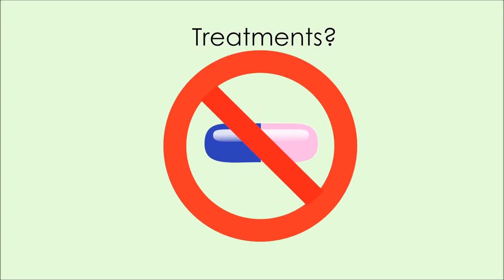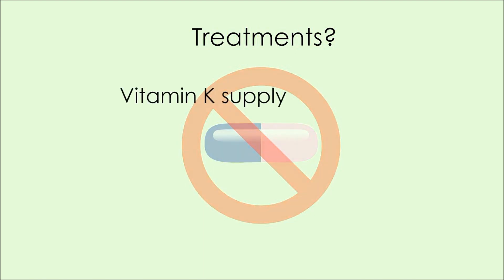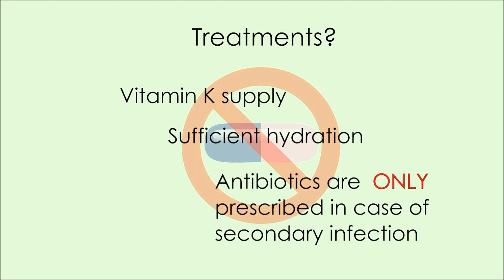Now what are the treatments for measles? There is no specific antiviral treatment. Treating the symptoms is usually the strategy: vitamin A supply in case of deficiency, sufficient hydration, and antibiotics are only prescribed in case of secondary bacterial infection.